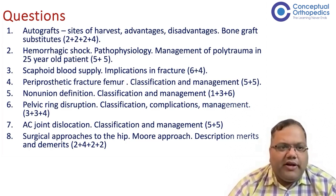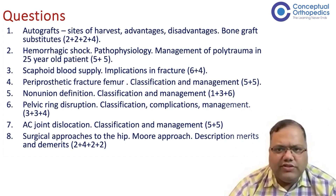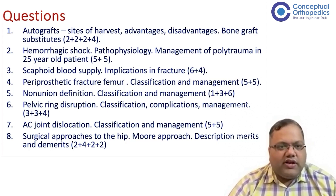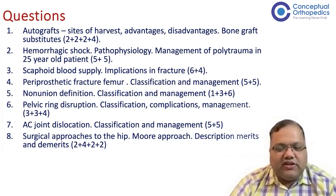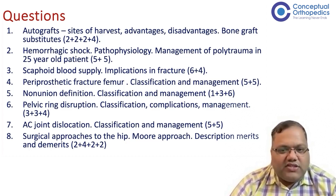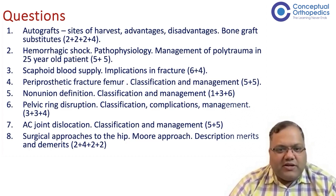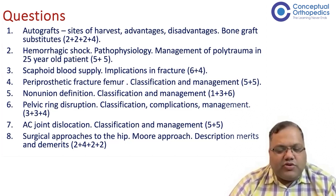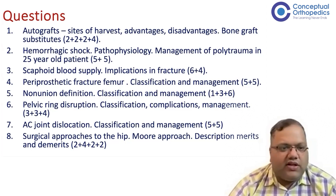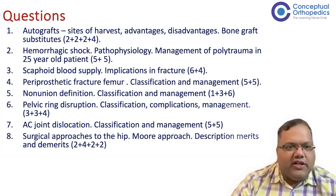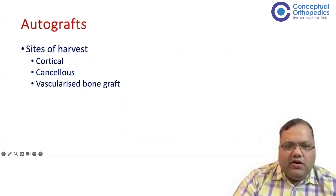Question one was on autografts — sites of harvest, advantages, disadvantages, and bone graft substitutes (2+2+2+4 marks). Question two was hemorrhagic shock, pathophysiology, and management of polytrauma in a 25-year-old patient (5+5 marks). Question three was on scaphoid blood supply and implications in fracture (6+4 marks). Periprosthetic fracture femur — classification and management (5+5 marks). Non-union — definition, classification, and management (1+3+6 marks). Pelvic ring disruption — classification, complications, and management (3+3+4 marks). AC joint dislocation — classification and management (5+5 marks). Surgical approaches to the hip — Moore approach, merits and demerits (2+4+2+2 marks). We'll cover the first four questions this week and the remaining five, including the LCP question, next week.